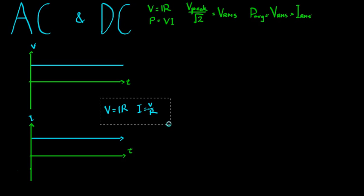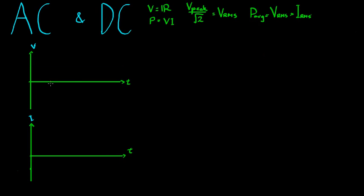The power coming out of the wall in your house though is a little different. It doesn't look like that at all. It tends to follow a sinusoidal wave, something like that. And Ohm's law still applies, V equals IR. So you expect the current to look similar.